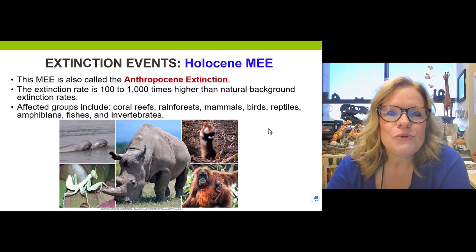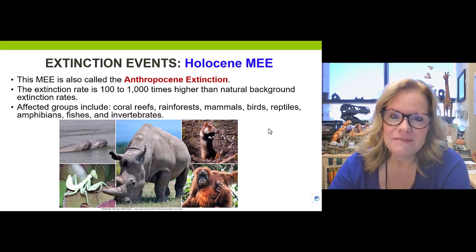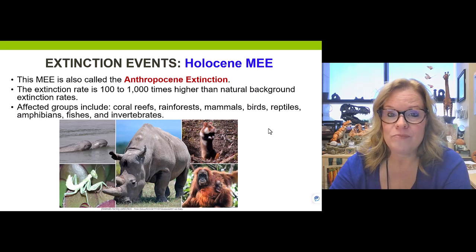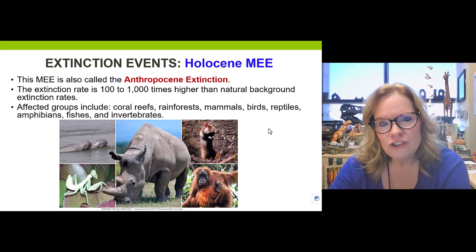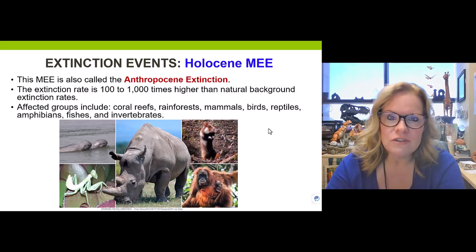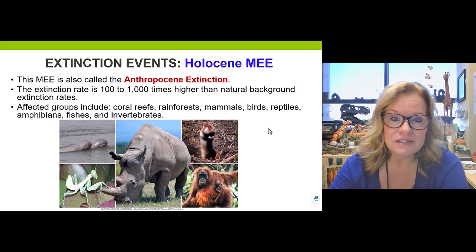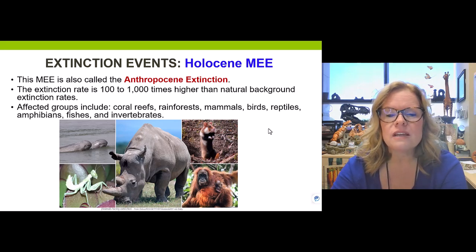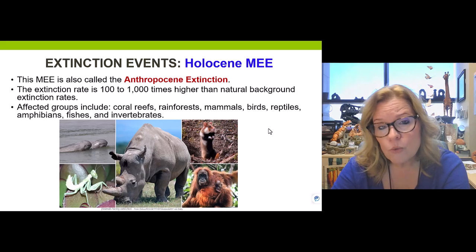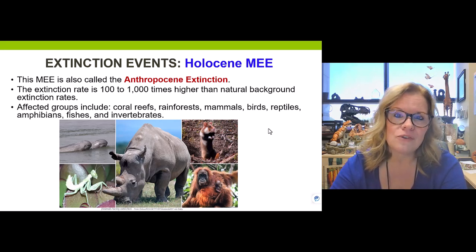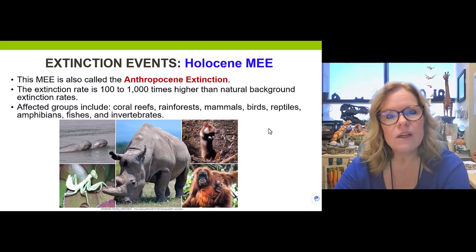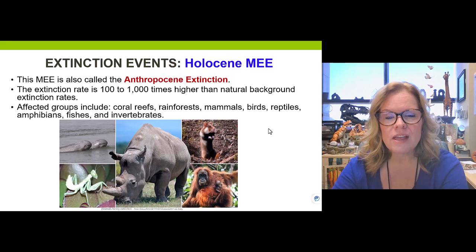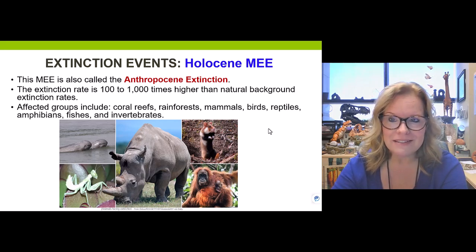That brings us to the sixth mass extinction event. There are only five recognized by geologists — so what does this mean? Eventually, the International Commission on Stratigraphy is expected to add another epoch to the Cenozoic called the Anthropocene, referring to the age of humans. The extinction rate for the Anthropocene extinction is 100 to 1,000 times higher than natural background extinction rates. It's not quite a mass extinction event yet, but it's headed that direction — also referred to as the Holocene mass extinction event. The Holocene is the most recent epoch on the timescale, at the very top of the Cenozoic in the epoch column.